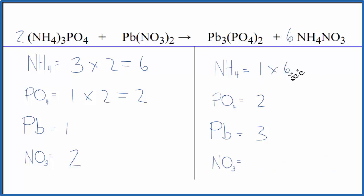One times six, that'll give me six ammonium ions there, and then one times six, that'll give me six of the nitrates.